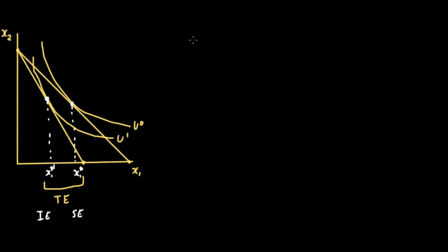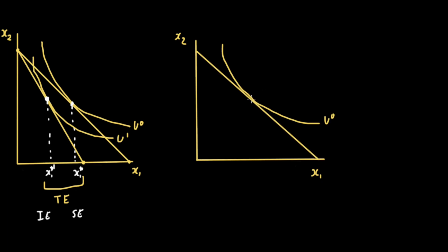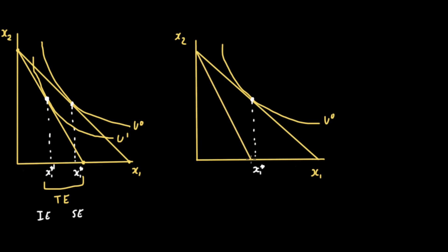We draw another indifference map with x2 on the vertical axis and x1 on the horizontal axis. We have the same utility level U0 and the same budget line. At the original prices, the optimal bundle is where the consumer consumes x1 star. When the price of good one increases, the budget line pivots, so the consumer can only consume less of good one.